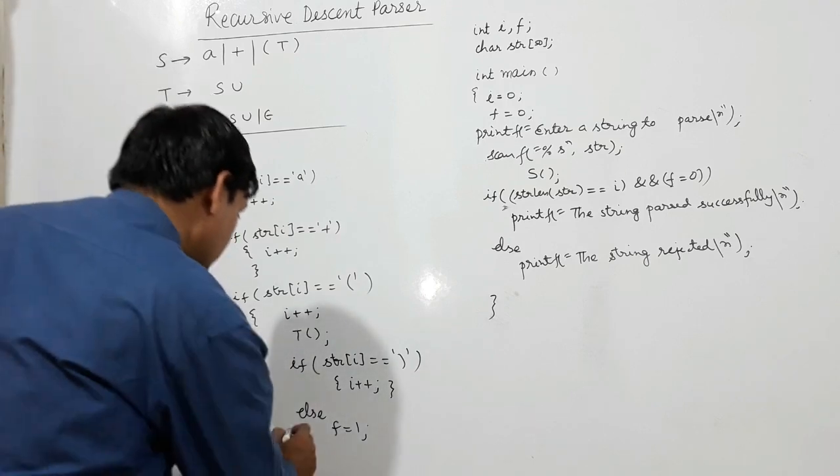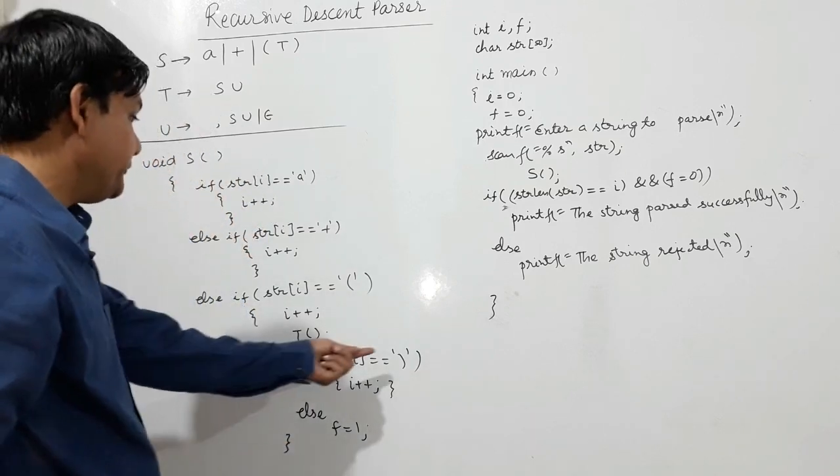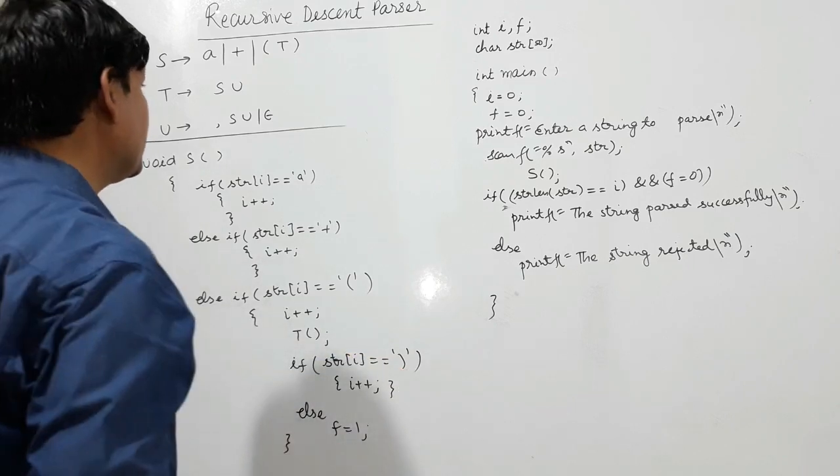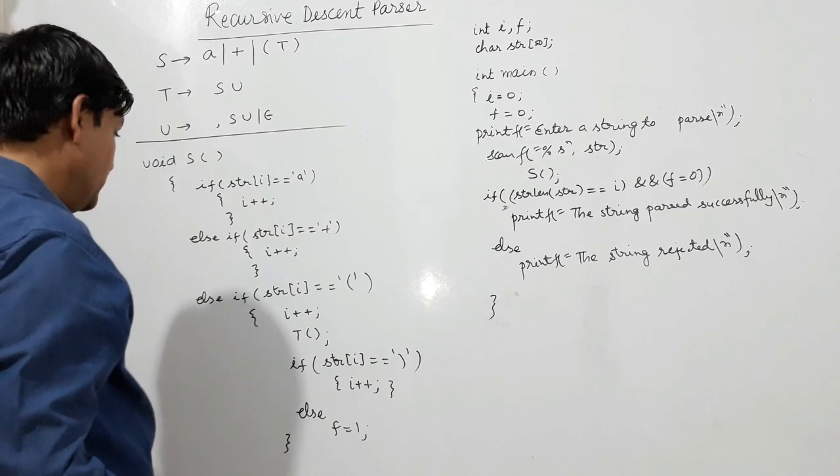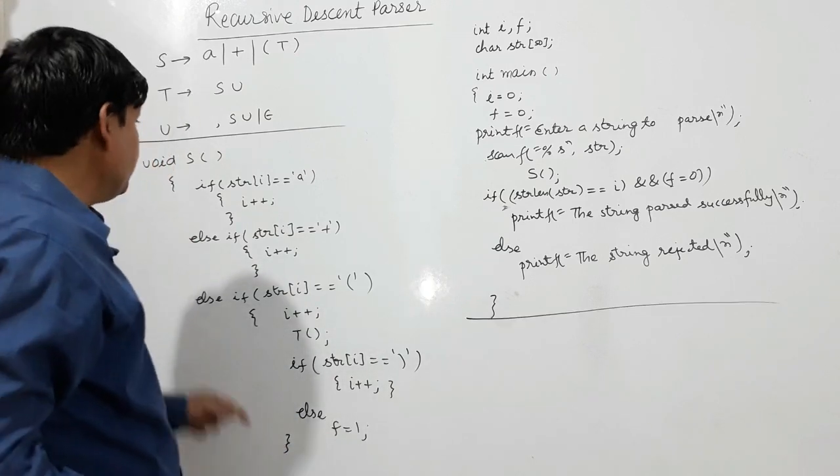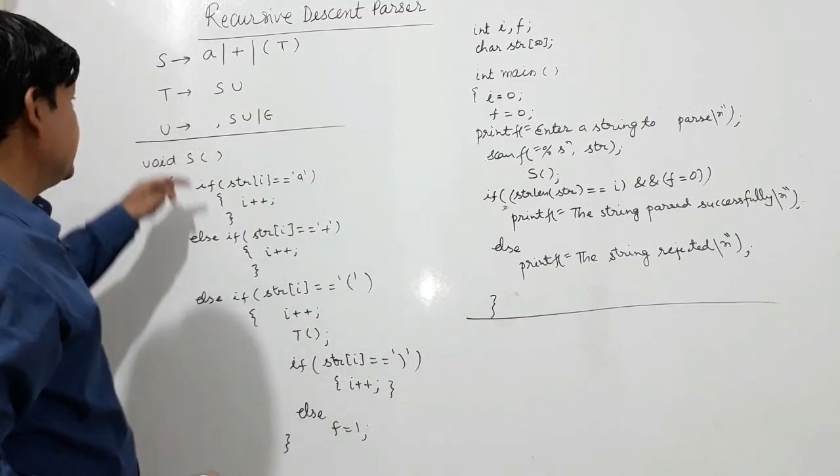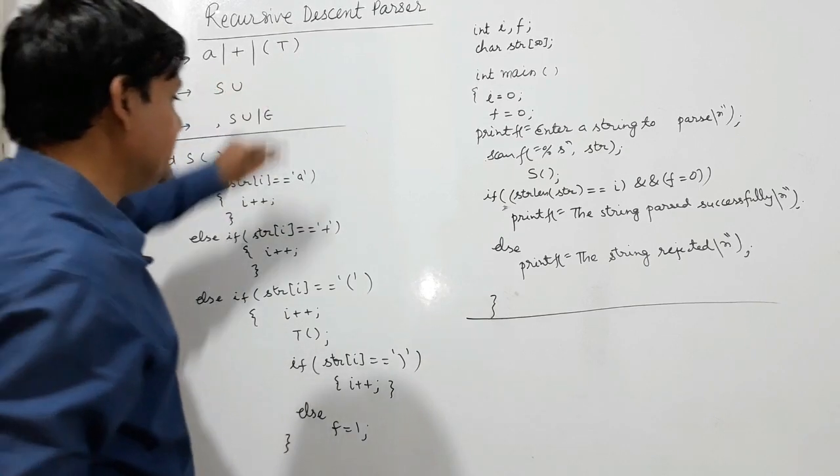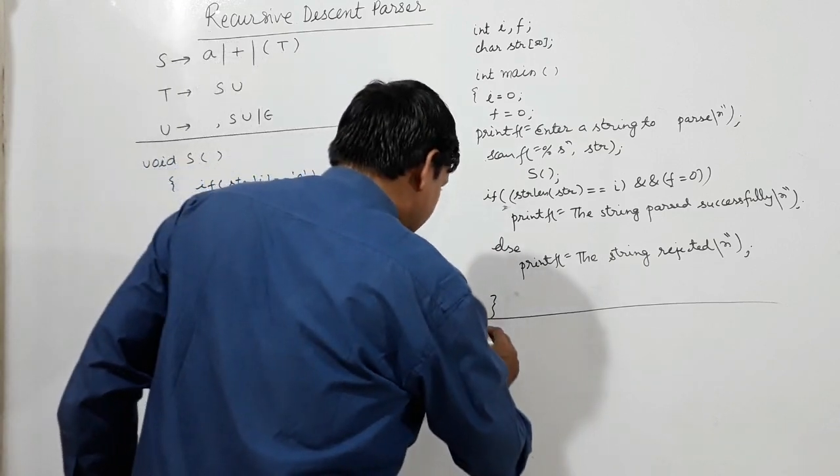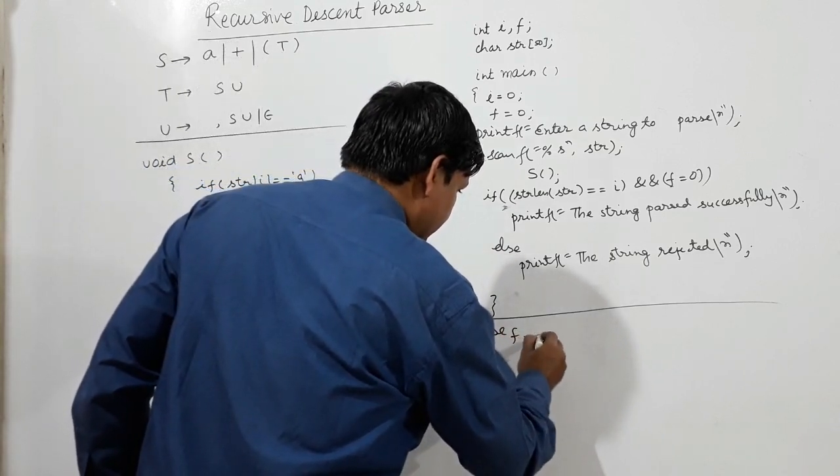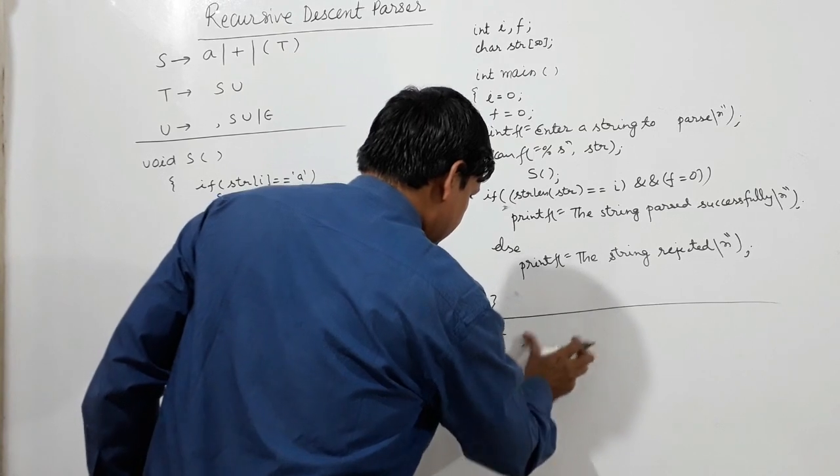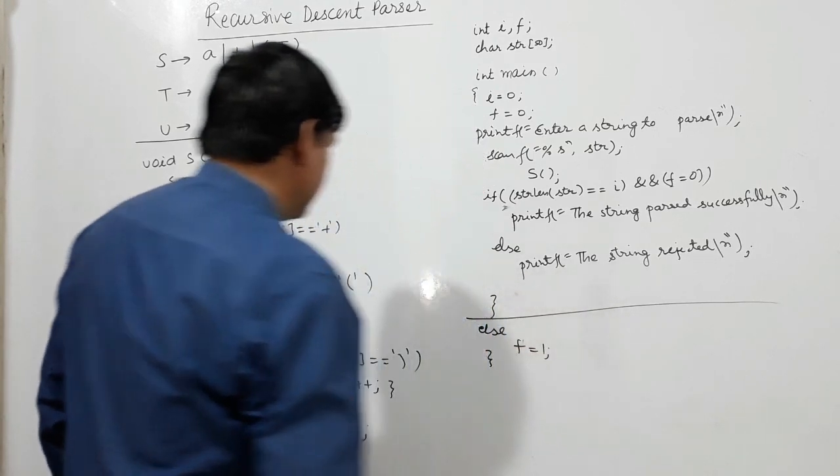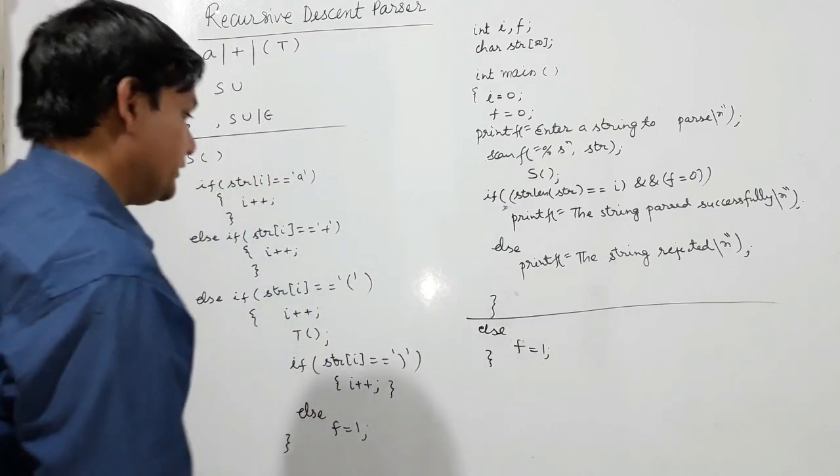Because if it's not ending with closed bracket then there will be an error. Else f equal to one, if this string doesn't start with a or plus or open bracket, then flag will be one. This is the end of this function AS.